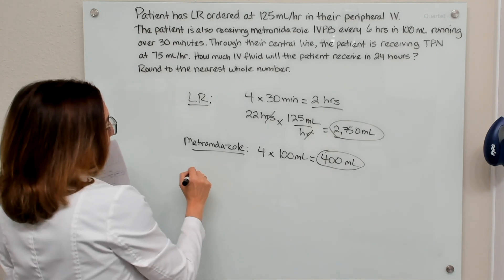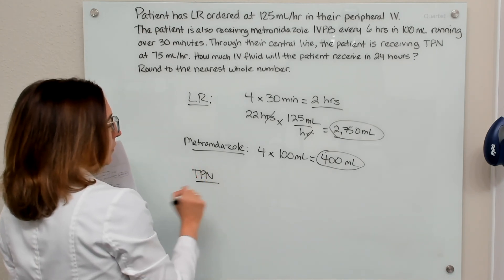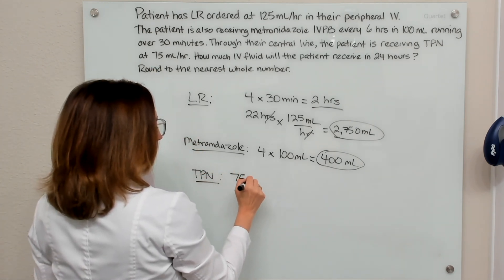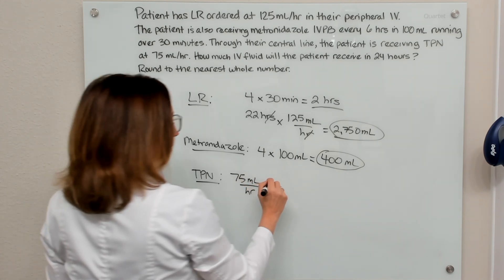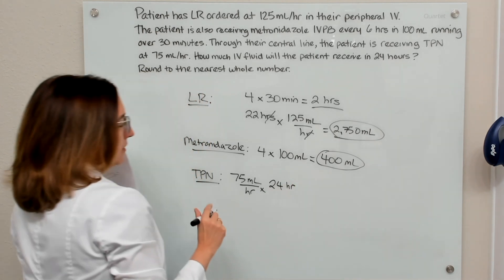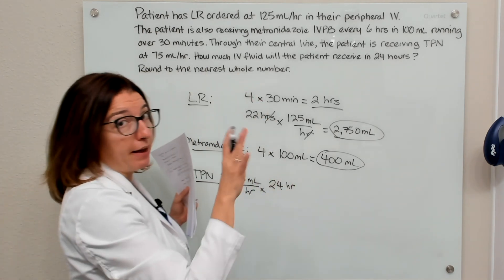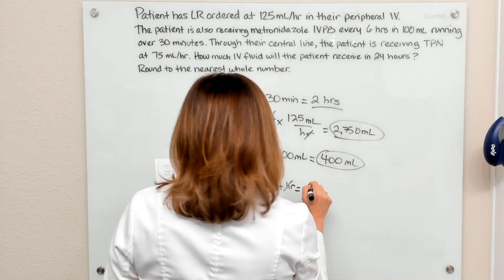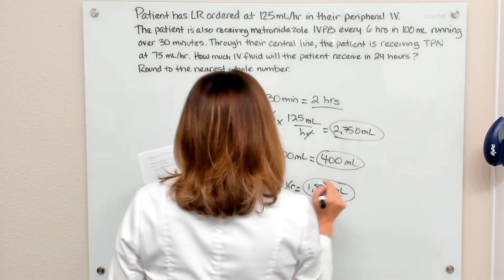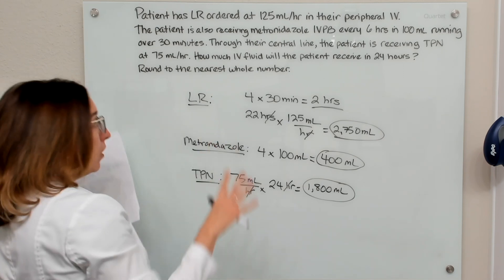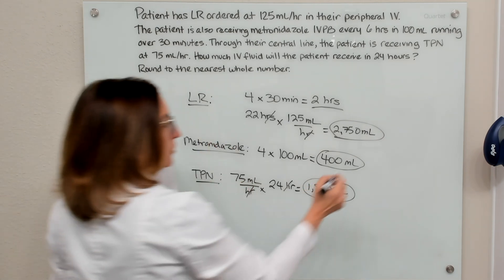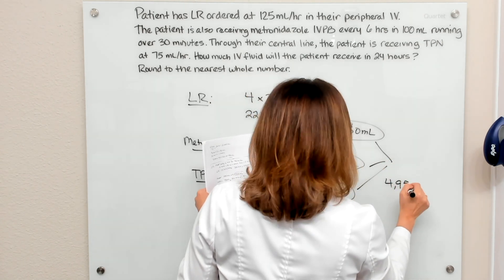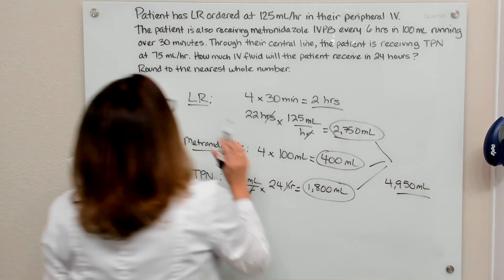Finally, we need to calculate how much fluid they're getting from their TPN, which is going through their central line. TPN is running at 75 milliliters per hour continuously over the full 24 hours — it's not stopping for any IV piggyback. So 75 mLs times 24 hours gives 1,800 milliliters. To calculate the total IV fluids the patient will receive in 24 hours, we add all three together: 2,750 plus 400 plus 1,800 equals 4,950 mLs.